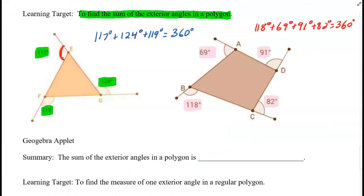So it turns out that the sum of the exterior angles in a polygon is always 360 degrees.